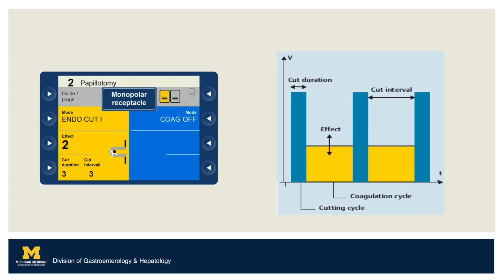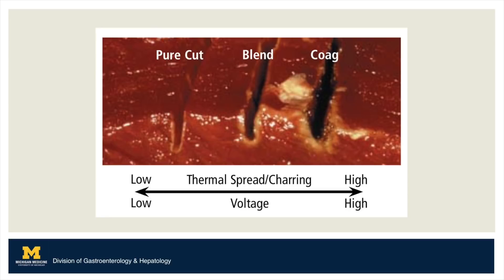As shown on the graph on the right, adjustments in the duration dictate the length at which the cutting portion of the current is applied. Adjustments in the interval will change the time between the application of each cut. Adjusting the effect will change the amount of tissue coagulation performed by the device, with higher effects leading to more coagulation. Notably, in order to obtain the coagulation effect of this blended current, the pedal needs to be stepped on continuously instead of intermittently.